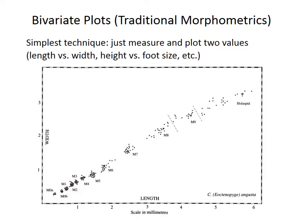The simplest form of morphometrics involves bivariate plots, which graphically relate two measured parameters — for example, length and width. In theory, specimens from species that differ in shape should follow along lines of different slope, with different intercepts, or with different trajectories in the case of trends that are not linear.